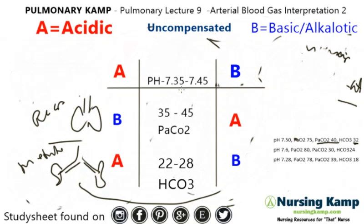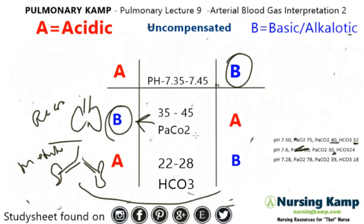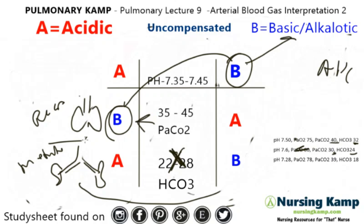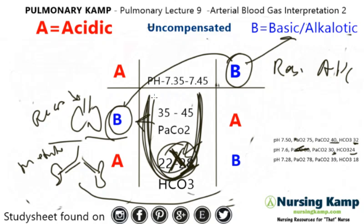Next example: pH is 7.60 — that's way over on the alkalotic side. PaCO2 is 30 — also way over, less than normal. Bicarb is 24 — right in the middle. We connect the letters: alkalotic condition. This is in the respiratory area, so it's respiratory alkalosis, but the bicarb is in the middle. Therefore it is uncompensated respiratory alkalosis.